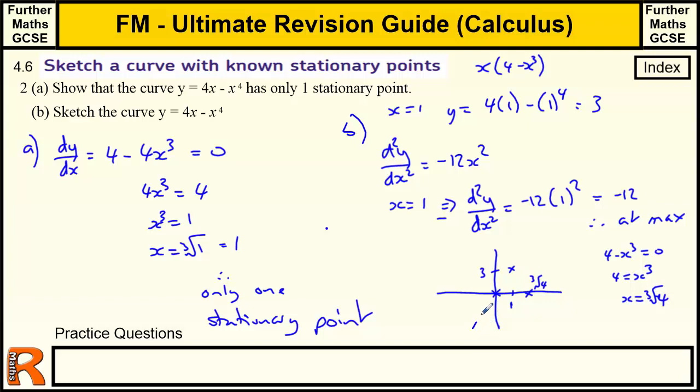We know this is a maximum. So we know the curve comes up, it touches that one and then comes down and goes through that one. We don't know what else happens, but those are the points where it touches the axes. That's the turning point. That's all we need to do to sketch that graph.